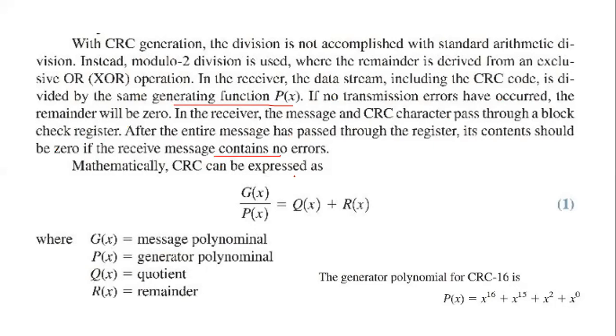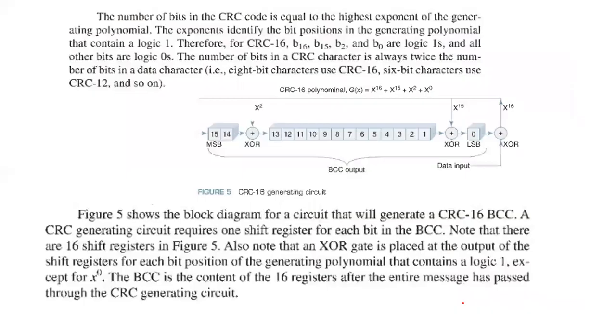Mathematically, CRC can be expressed as G of X divided by P of X equals Q of X plus R of X. G of X is the message, P of X is the polynomial. The quotient and remainder are important. We usually use a polynomial: X raised to 16 plus X raised to 15 plus X raised to 2 plus X raised to 0.